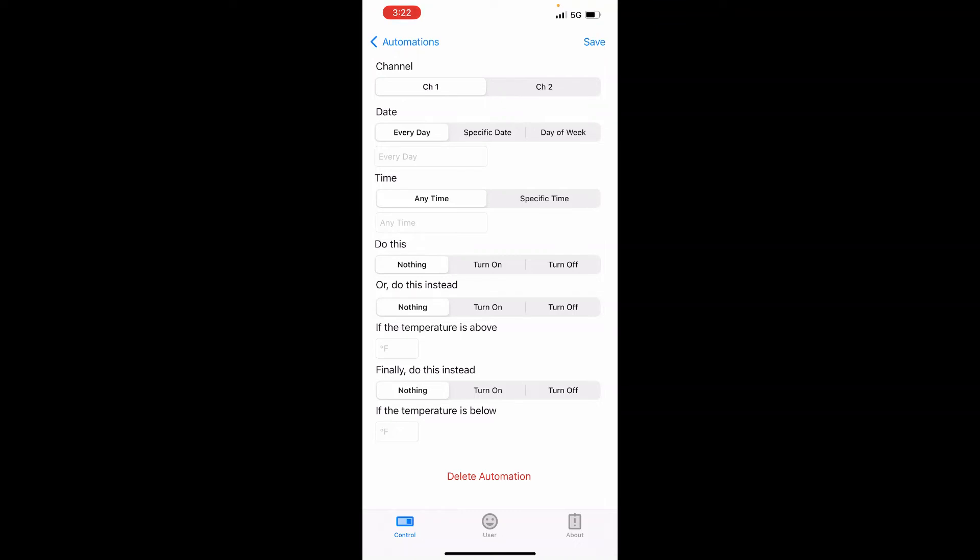We can go into here. We don't currently have any automation, so we'll click that plus add button and you can set up which channel, which one of the outlets, one or two, and the date and time, how you want to do it. Do you want to turn it on, do you want to turn it off? You can use temperature to turn it on or off. That's a pretty cool function for people who maybe have some weather that sometimes it dips below 32 degrees but doesn't stay there very long and you want to keep your engine nice and warm.